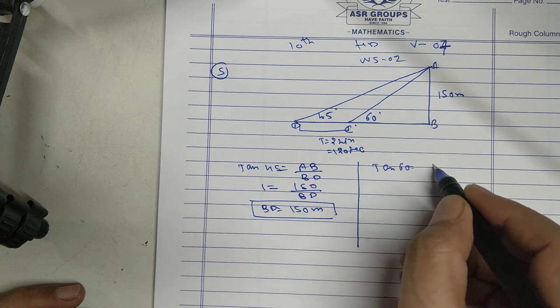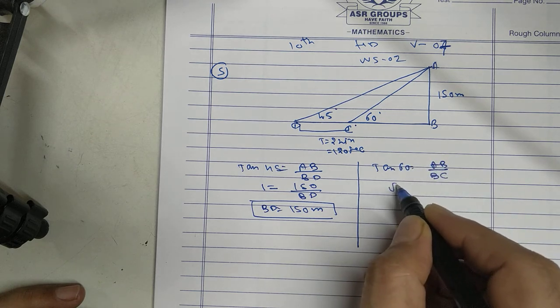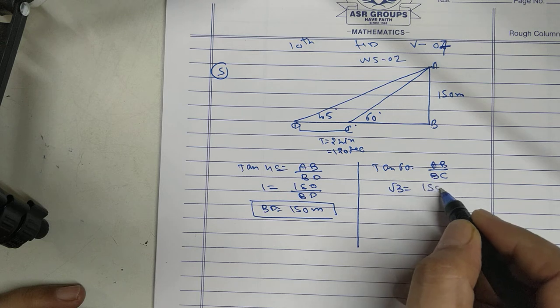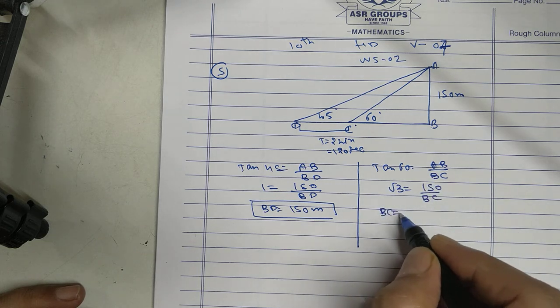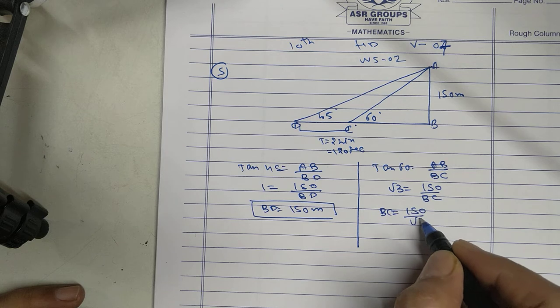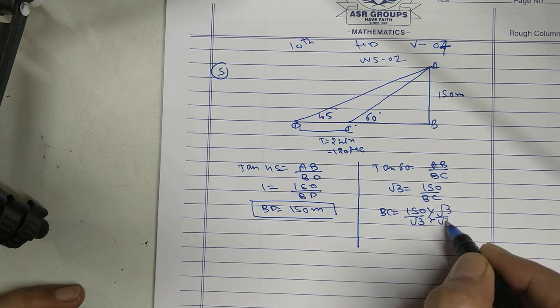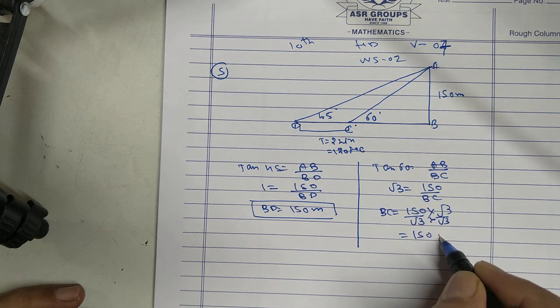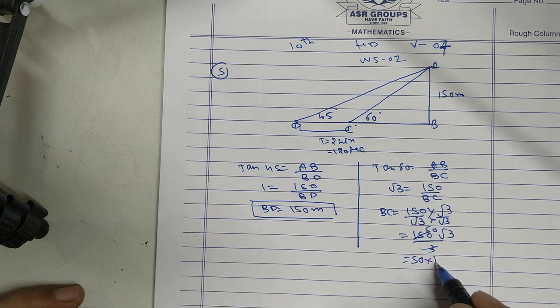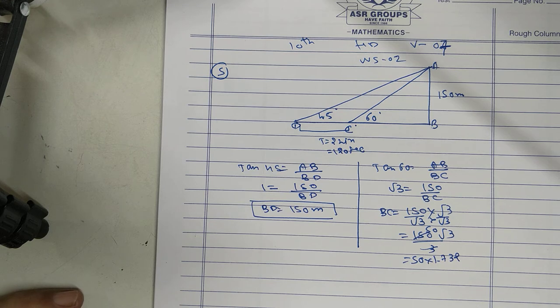Tan 60 is AB upon BC. Root 3 is 150 upon BC. BC is 150 upon root 3. We will rationalize 150 root 3 upon 3. So, 50 into 1.732.